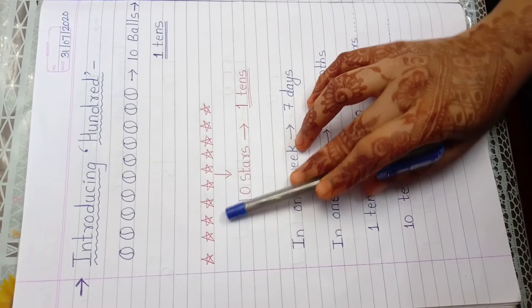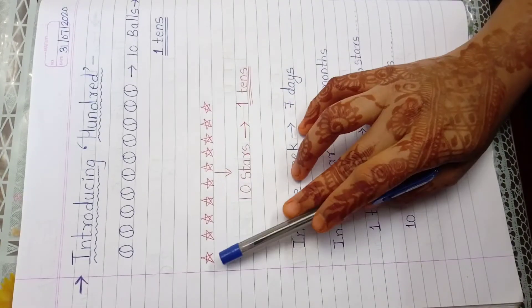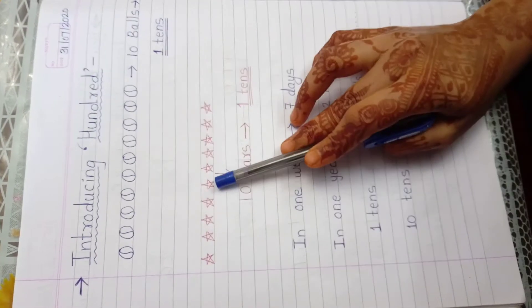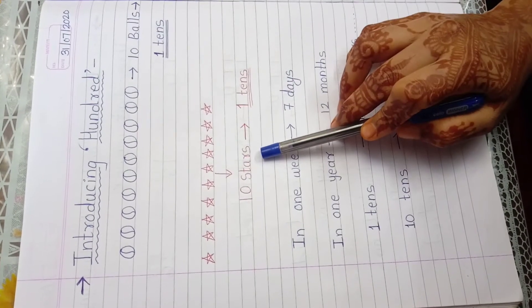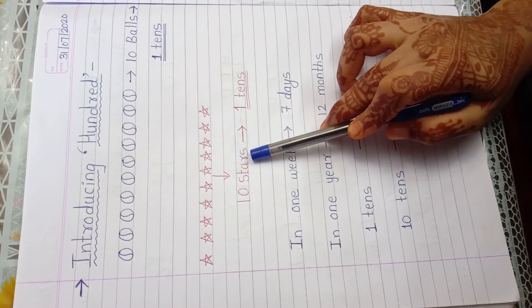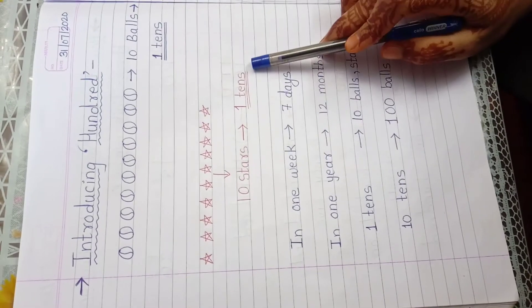Now see this example. Here how many stars? 1, 2, 3, 4, 5, 6, 7, 8, 9, 10. 10 stars. How many stars? 10 stars. Means how many tens? 1 tens. Okay.